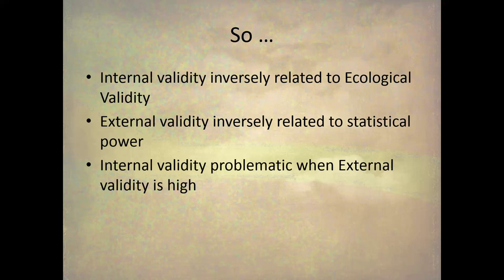This brings us back to a major concept in the course: replications and extensions. You don't prove or find anything important from just one study, because any single study will have either good internal validity and bad ecological validity, or good internal validity and bad external validity. You can't design an experiment that has everything high — you can't design an error-free experiment. The only way to determine if a relationship between two variables exists is to do a series of studies — replications and extensions.